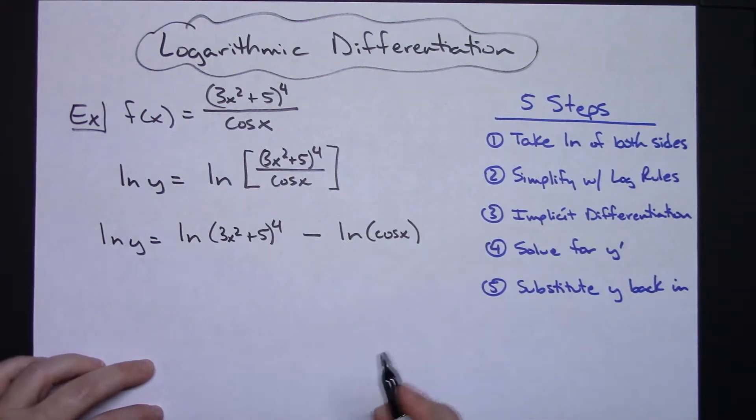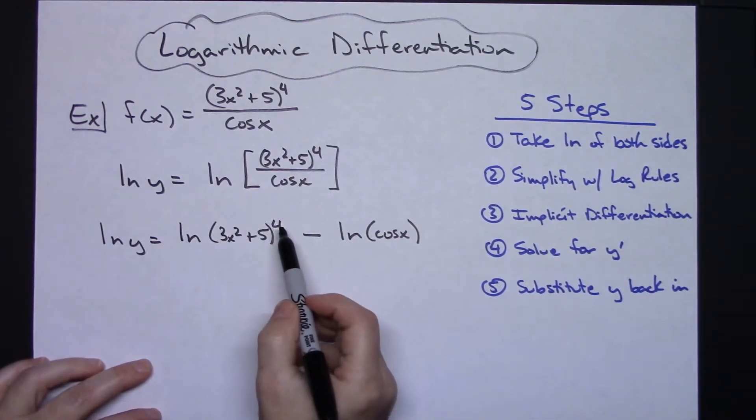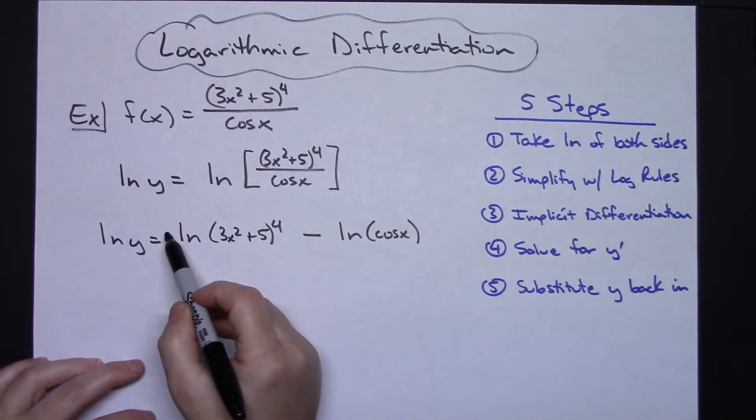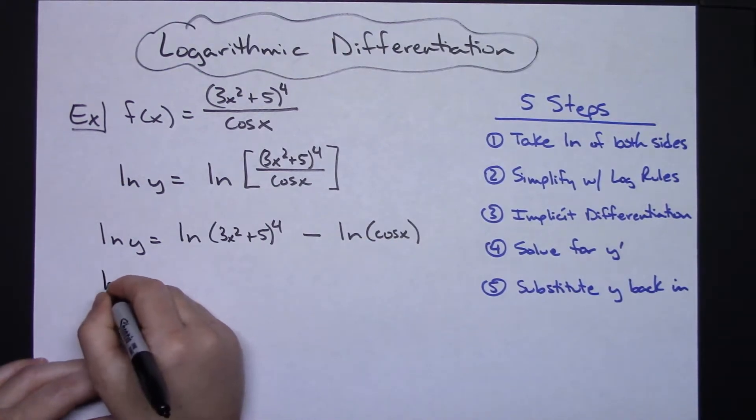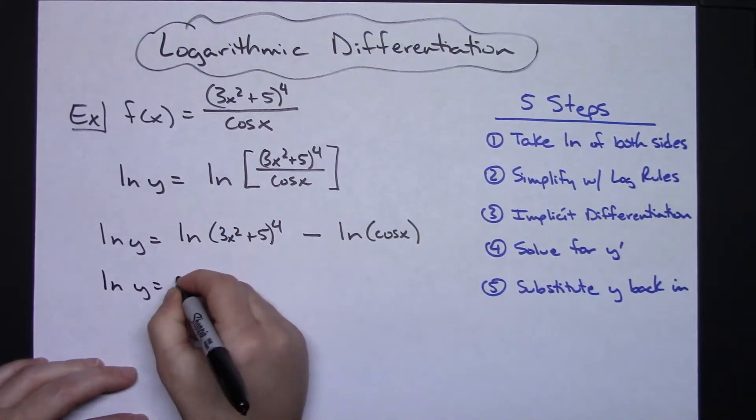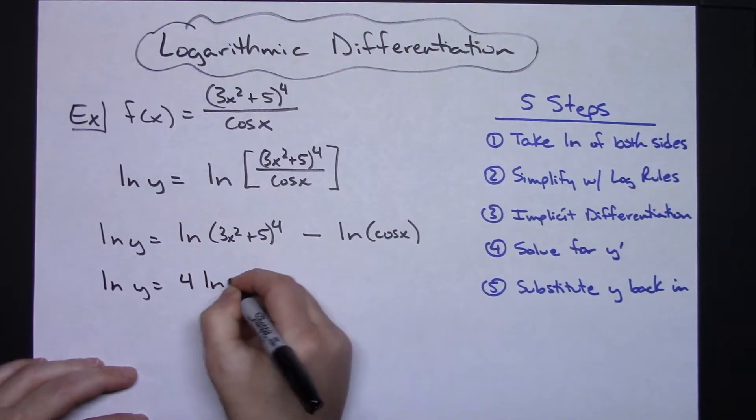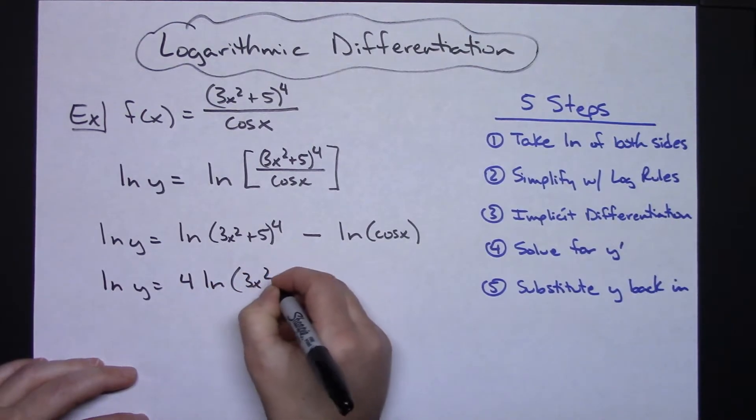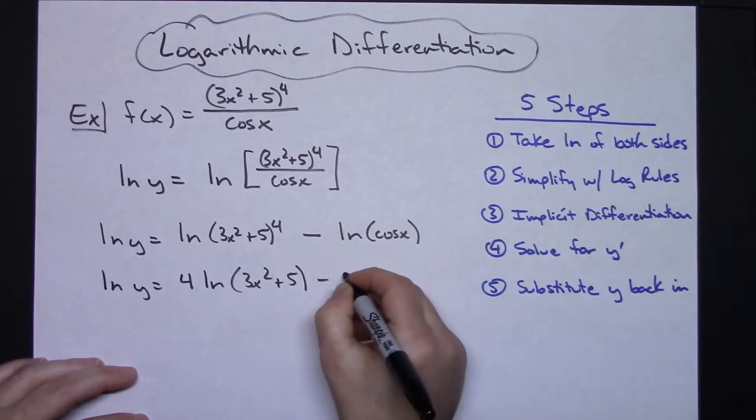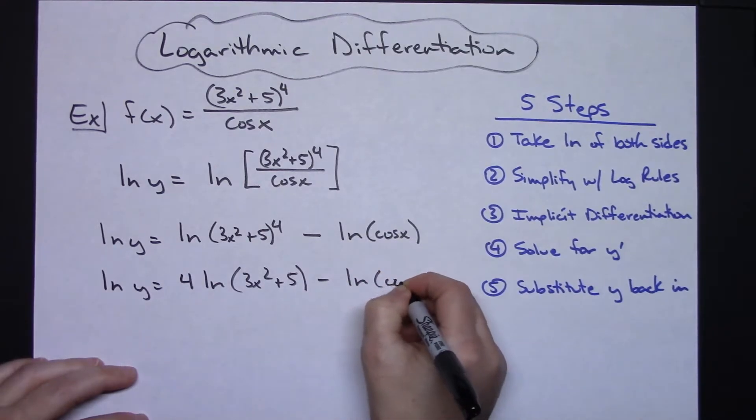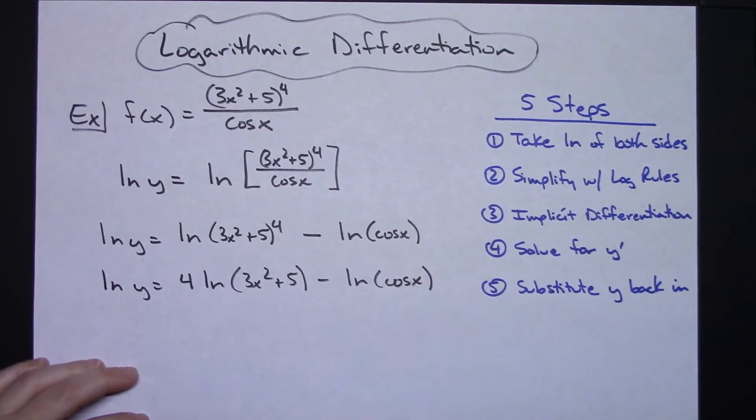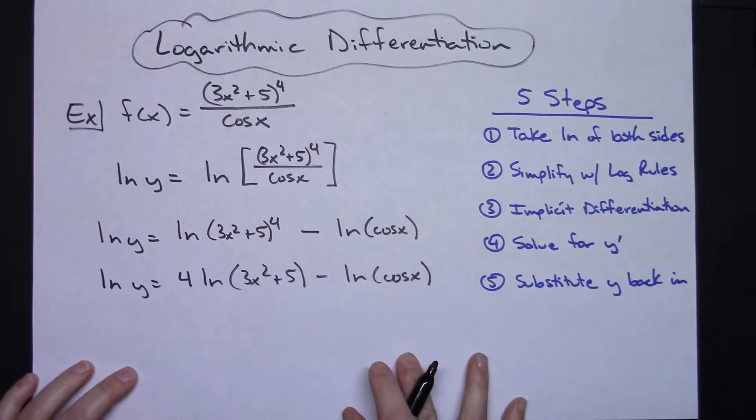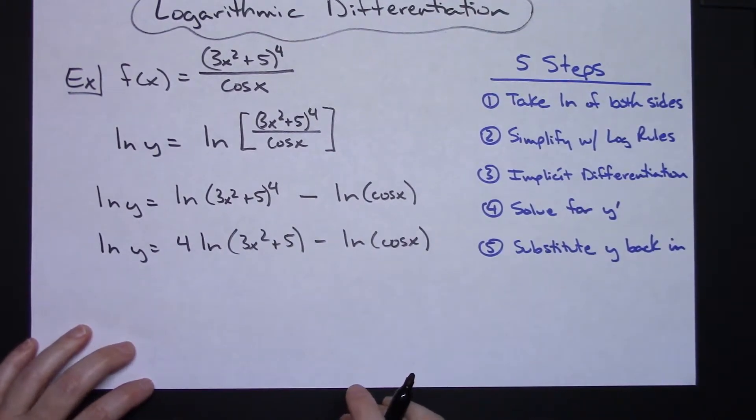Now I'm going to continue to simplify with log rules because I have 4 up here that can be brought down in front. So natural log of y equals 4 natural log of 3x squared plus 5 minus that natural log cosine x. That pretty much is all the simplifying that I can do with my log rules.